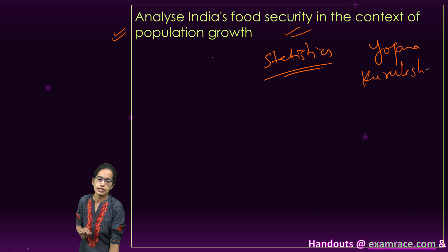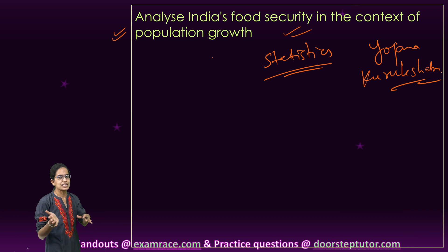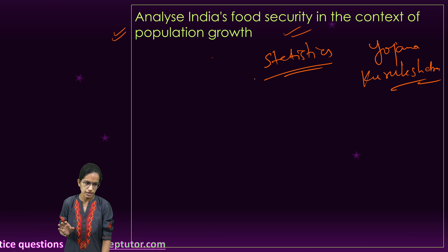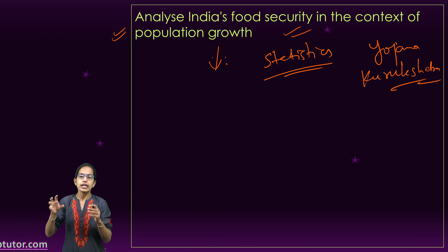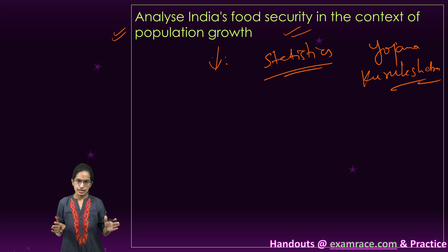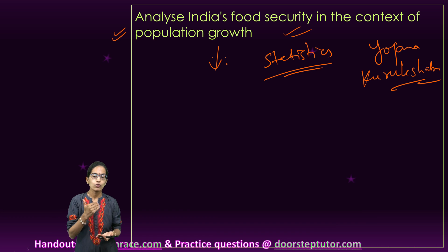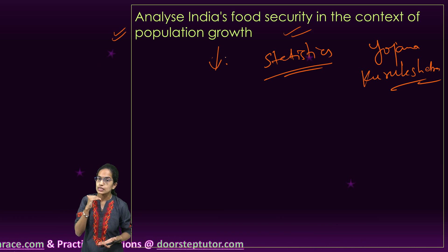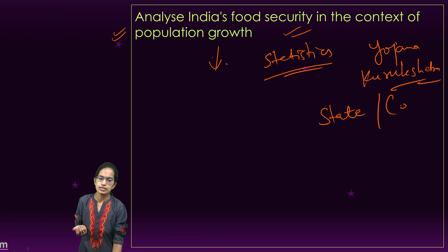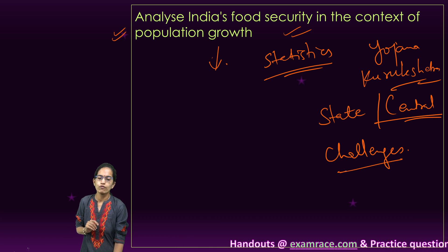Even if you do not remember a lot of data, data from pre-independence, post-independence, pre-liberalization, or post-liberalization would be more than sufficient. For this question, you have to first identify the causes of food insecurity in India, how population growth is directly related to food insecurity, the status of food security over the years, how it has changed, and the various initiatives launched by the government — classified under state and central initiatives — and finally mention the challenges to food security in India.